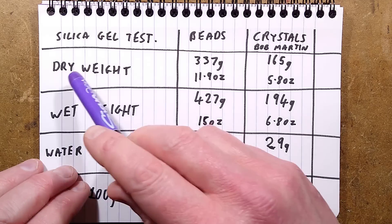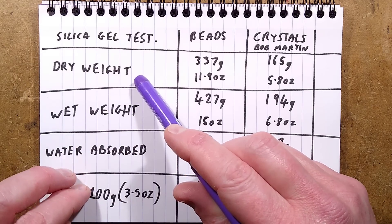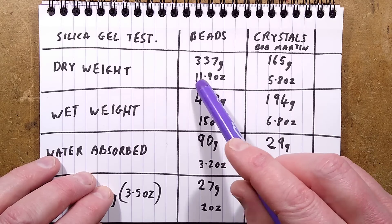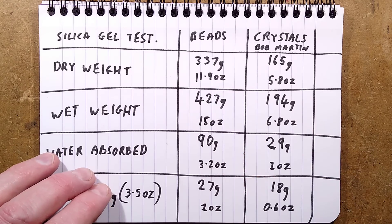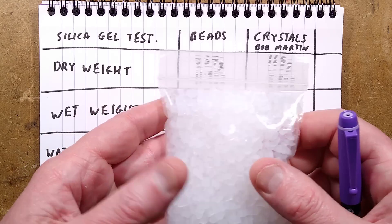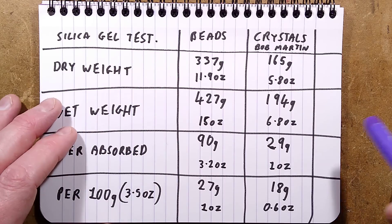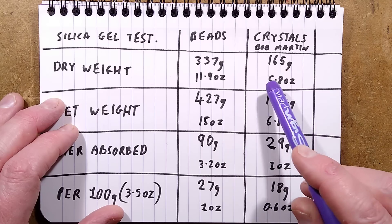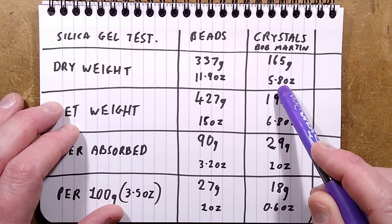So, the dry weight of the silica gel, the beads in those cartridges was 337 grams or 11.9 ounces. The cat litter crystals are much much lighter, they must be a porous structure maybe so they can absorb the liquids and compared to 337 grams I was only able to fit 165 grams or 5.8 ounces into the cartridge.